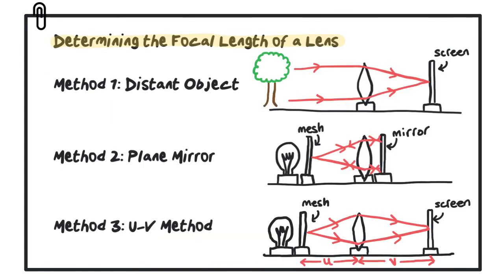So that's the three methods we can use to find the focal length of a converging lens: use a distant object, use a plane mirror, or measure the distances using the u-v formula. It would be a good idea to pause the video and make a copy of this screen for your revision notes. It's important to understand the ray diagrams of how light travels in each of these scenarios.